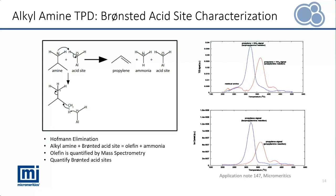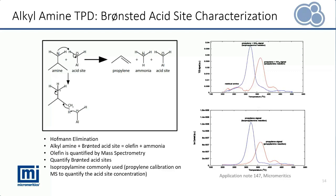Commonly used alkyl amine for this application is isopropyl amine. A mass spectrometer has to be employed for this method since we cannot differentiate the olefin TCD signal — propylene in this case — from the ammonia TCD signal. More details on this method can be found in our application note 147.